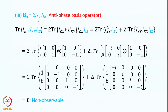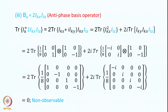Now let us look at anti-phase magnetization — K magnetization that is anti-phase with respect to the L spin. Take Bs equal to 2·IKx·ILZ. This is an anti-phase basis operator. Doing the same calculation, trace(IK+ · 2·IKx·ILZ): since IKx and IKy are operators of the K spin while ILZ is of a different spin, we must take the direct product of their matrix representatives.